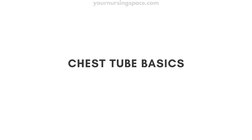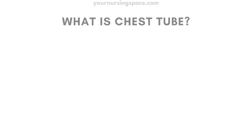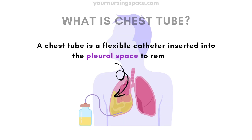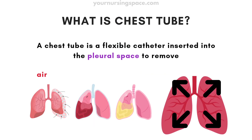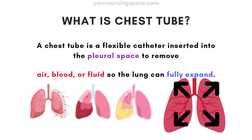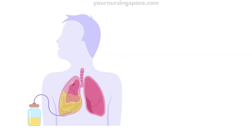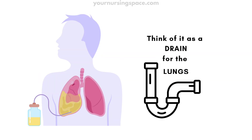Let's start with the basics. What is a chest tube? A chest tube is a flexible catheter inserted into the pleural space to remove air, blood, or fluid so the lung can fully expand. Think of it as a drain for the lungs.